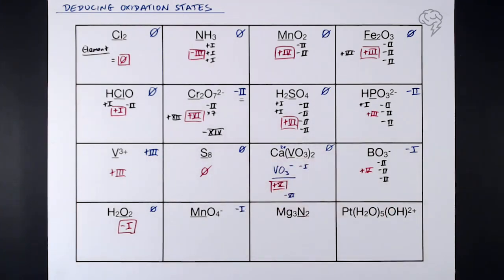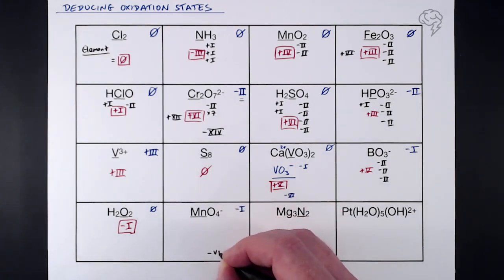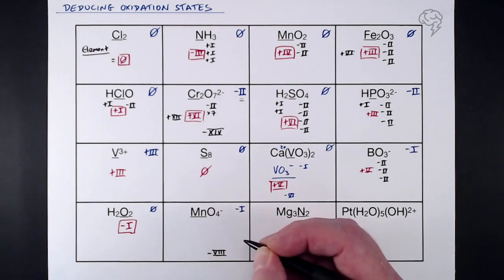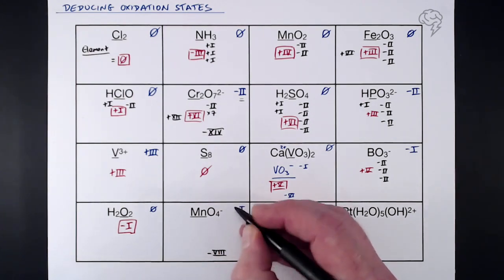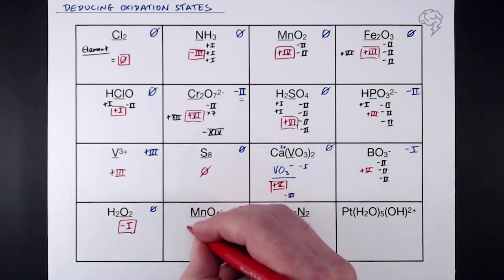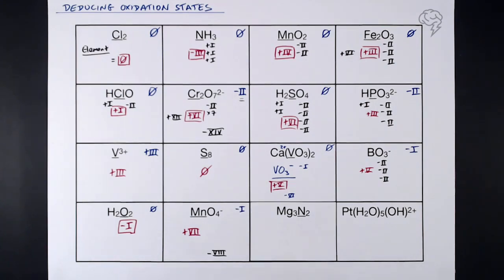The manganate ion, MnO₄⁻: overall oxidation state of -1. Four lots of -2 for oxygen takes us to -8. The difference between -8 and -1 is +7, so manganese has a +7 oxidation state here. This is a very common one — potassium manganate(VII) — named after the +7 oxidation state of the manganese.